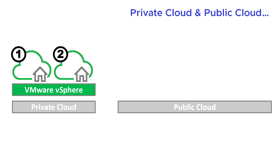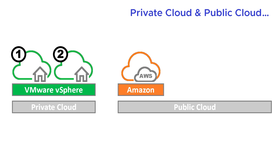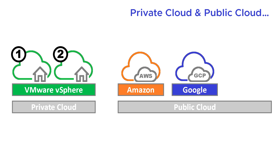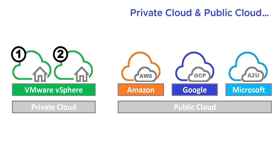So there's data center one and data center two on our private cloud, but there's also an appetite to move to some kind of public cloud - things like Amazon AWS, Google GCP, and Microsoft Azure.